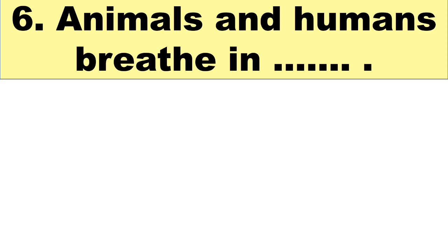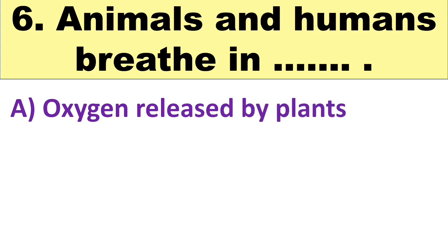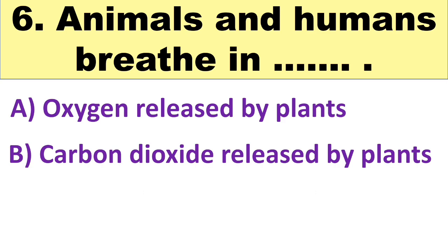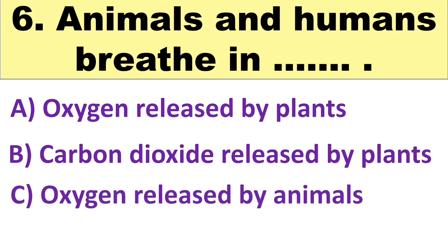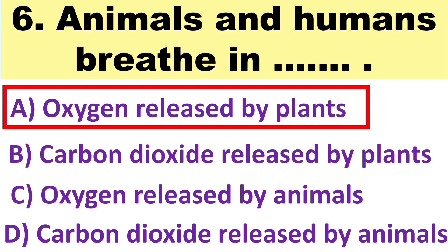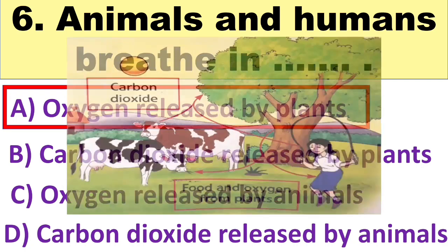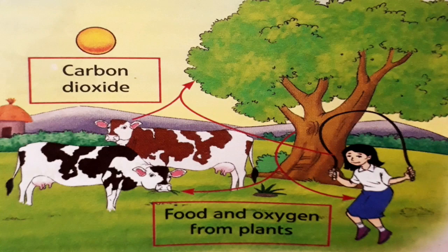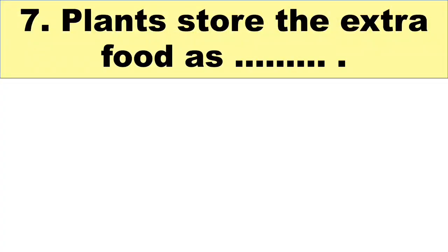Question number 6 is: animals and humans breathe in blank. Your options are A. Oxygen released by plants, B. Carbon dioxide released by plants, C. Oxygen released by animals, and D. Carbon dioxide released by animals. You can also pause the video and read the options. The right answer is oxygen released by plants. Animals and human beings take food and oxygen from the plants, and we give out carbon dioxide which is taken by the plants.